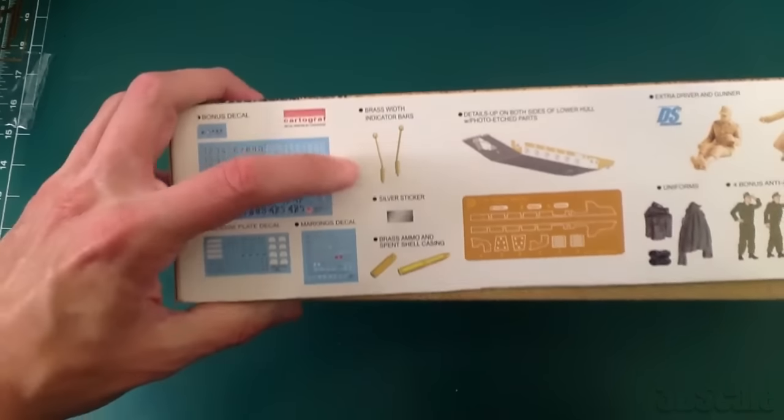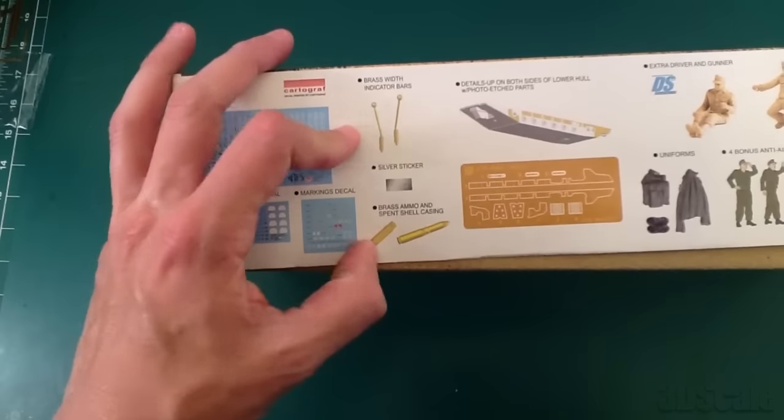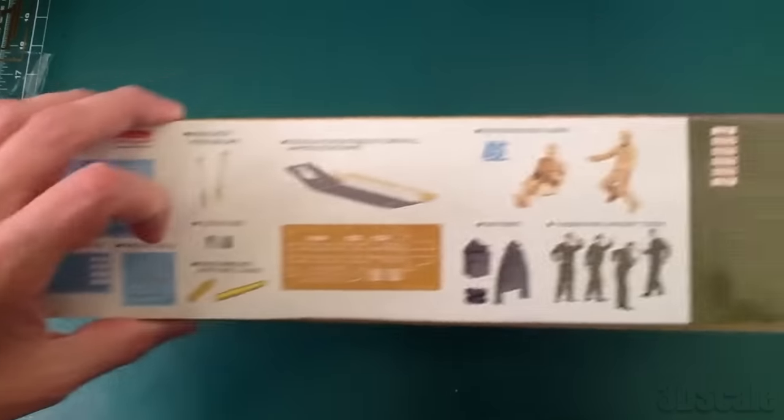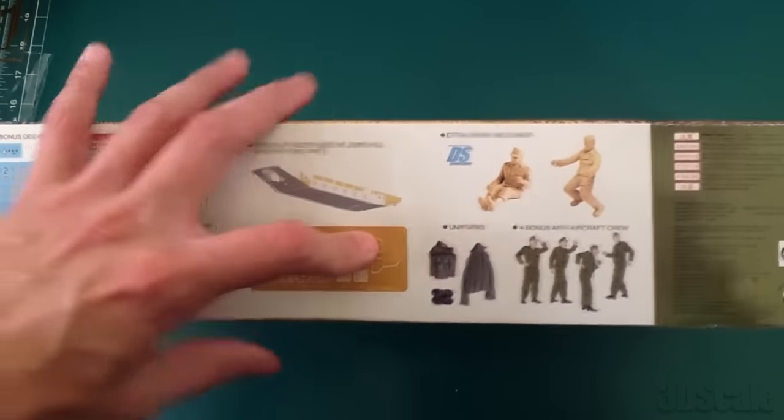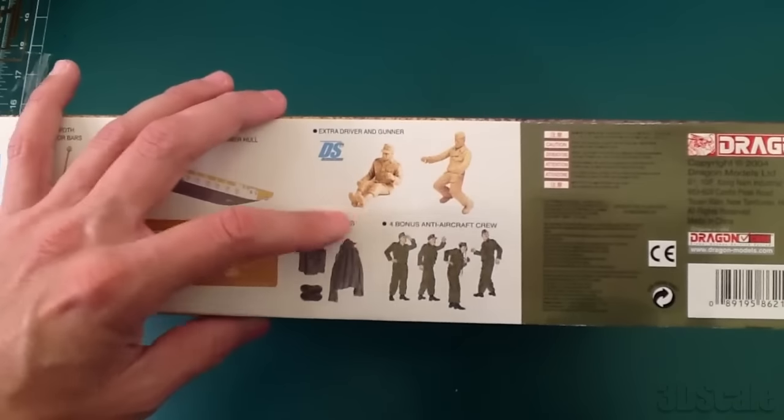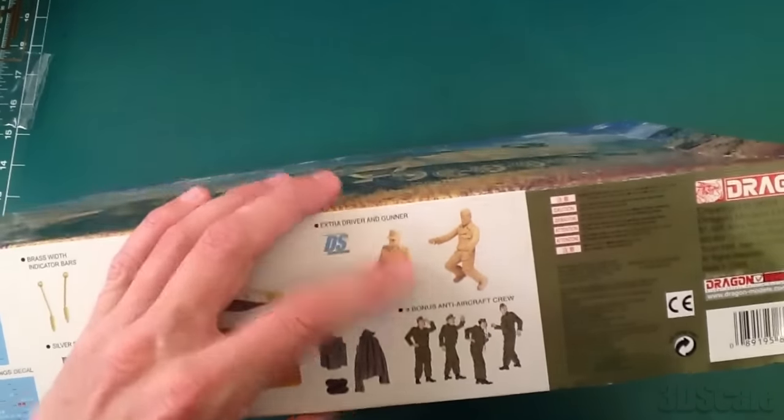Lots of decals, brass width indicators, brass shells, sticky mirror things, PE for the hoe which is right there, some soft styrene uniforms, an extra figure set, some DS figures.